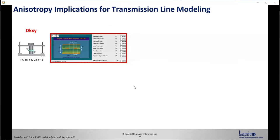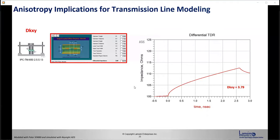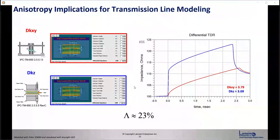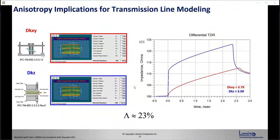Here's the implication for transmission line modeling. If we use DKxy from the split post cavity resonator and design for 100 ohms, things look correct on the TDR of that geometry. But in reality, the DKz gives you a higher impedance. And if you started with DKxy and have 23% anisotropy, the impedance would be way out of spec — an extreme case.